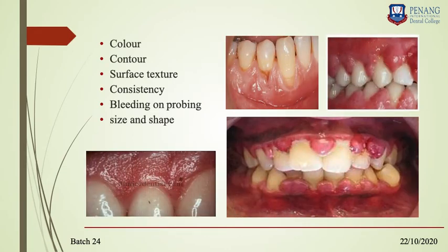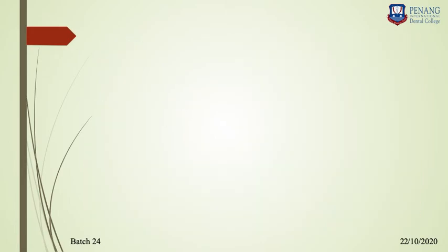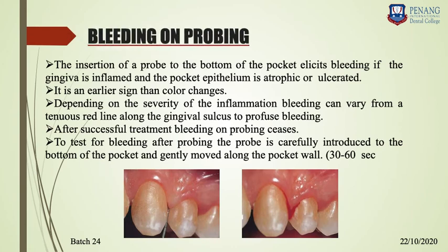So, the six gingival findings to assess are: color, contour, consistency, surface texture, bleeding on probing, and recession shape. When assessing bleeding, insert the probe to the bottom of the pocket — if the gingiva is inflamed and the pocket epithelium is atrophic or ulcerated, there will be bleeding. This is the earliest sign, even before color change. That is why it is the first clinical sign of inflammation.